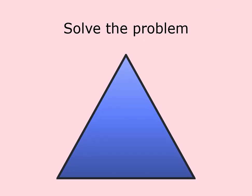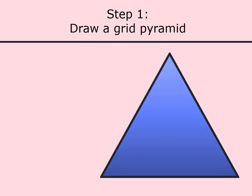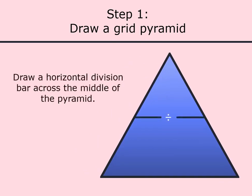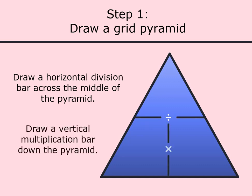Let's use the grid pyramid to solve the problem. Step 1: Draw a grid pyramid. Draw a horizontal division bar across the middle of the pyramid. Then draw a vertical multiplication bar down the pyramid.